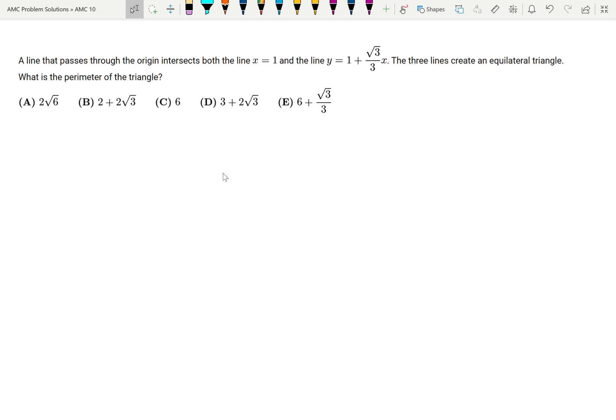A line that passes through the origin intersects both the line x equals 1 and the line y equals 1 plus root 3 over 3x. The three lines create an equilateral triangle. What is the perimeter of the triangle?